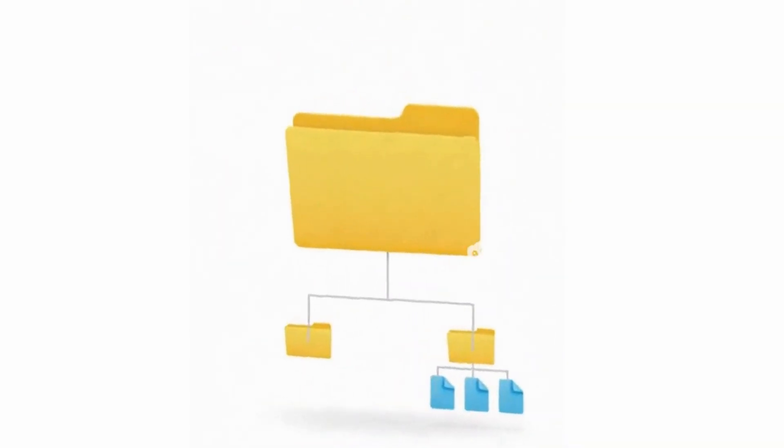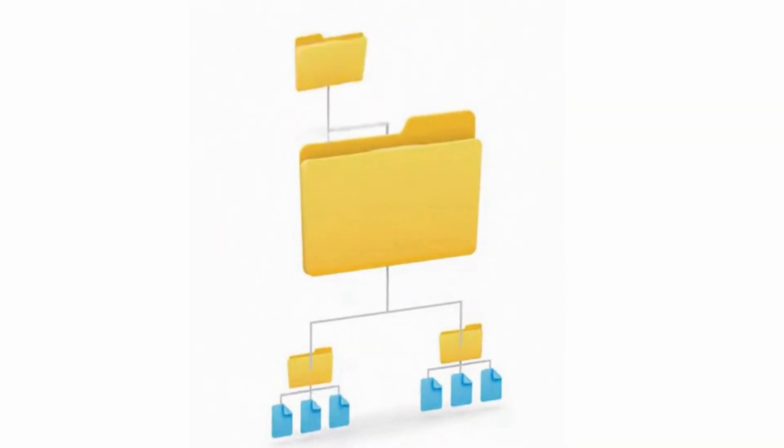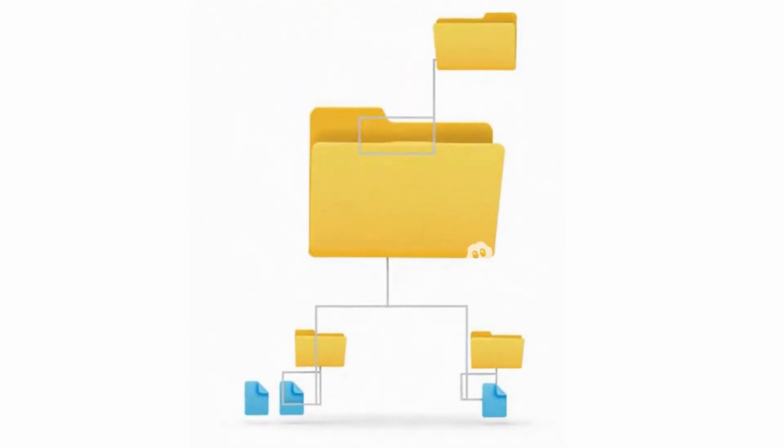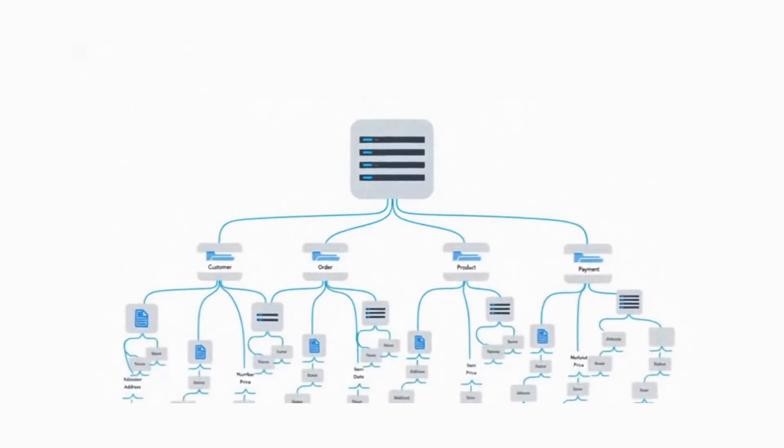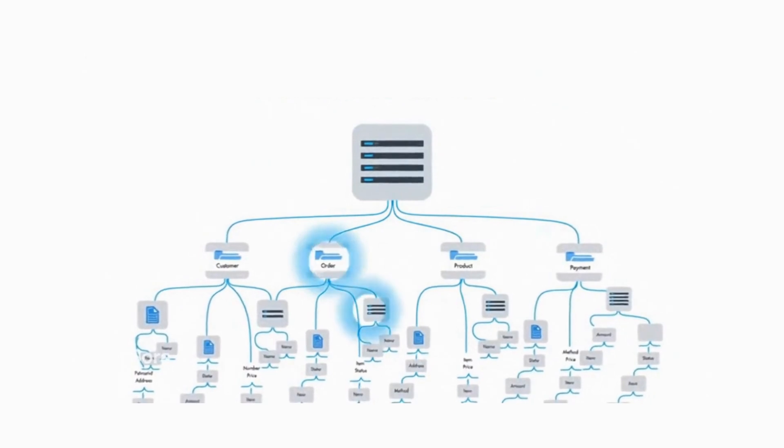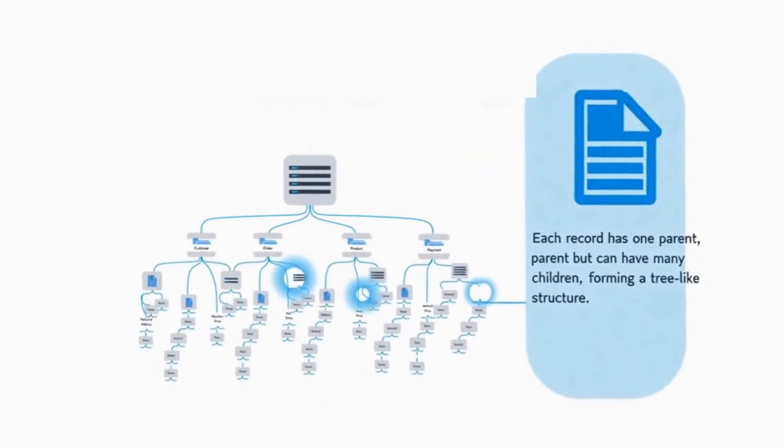Number nine, hierarchical databases. Hierarchical databases organize data like a family tree or company organizational chart. Everything has a parent-child relationship, creating a tree-like structure. Think of your computer's file system. Folders contain subfolders which contain files. That's a hierarchical structure.